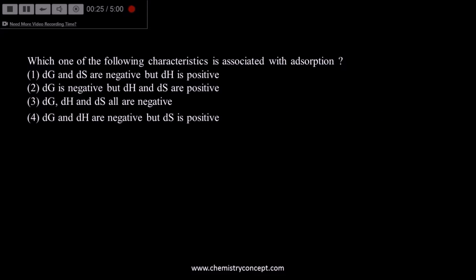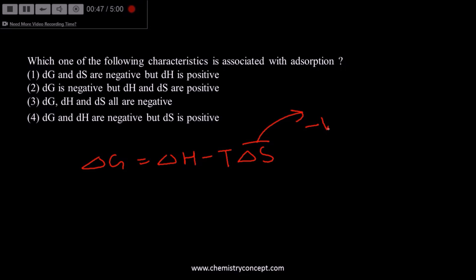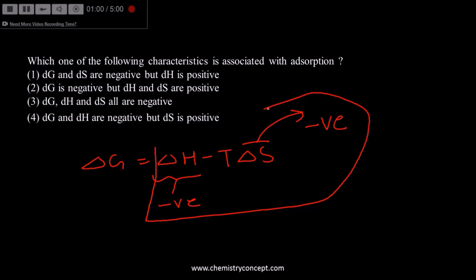The first question is about the characteristics of adsorption. The formula is ΔG = ΔH − TΔS. During adsorption, the randomness of molecules decreases, so ΔS is negative. ΔH is also negative because adsorption is always exothermic. Consequently, as per this formula, ΔG will also be negative. So ΔG, ΔH, and ΔS are all negative.